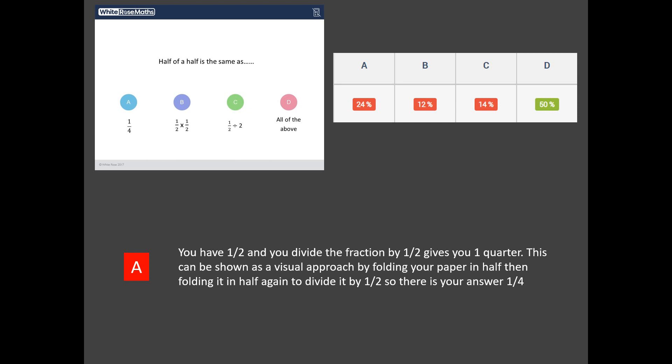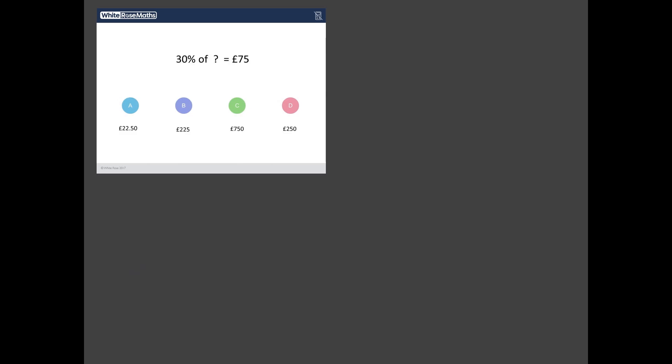Okay, let's have a look at the second least worst answered question. And it is this one here on percentages. Now, this is one of my favorite questions because it's very easy to make a mistake here and rush into it. So let's write down what we've got. We've got 30% of something, of some mystery amount. Don't know what that mystery amount is. 30% of something equals £75.